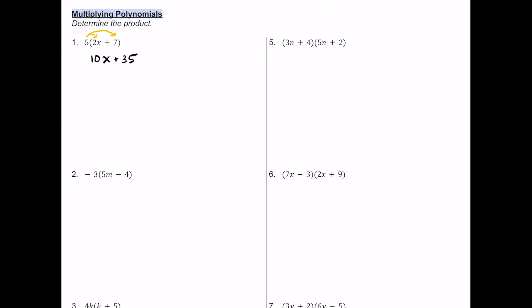Number two is very similar to number one. We're going to distribute the negative 3 monomial to the two terms on the inside. Negative 3 times 5m equals negative 15m. Then negative 3 times negative 4 is going to equal positive 12.